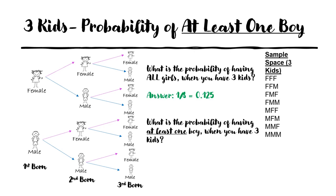So now we know the probability of having all girls with three kids is one-eighth. What's the probability of having at least one boy when you have three kids? That's basically all the other families — all the others have at least one boy except the family with all girls. So that's seven out of eight.